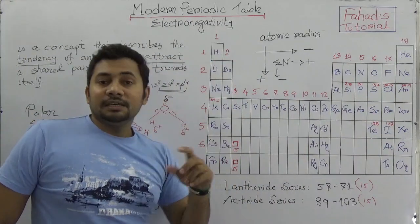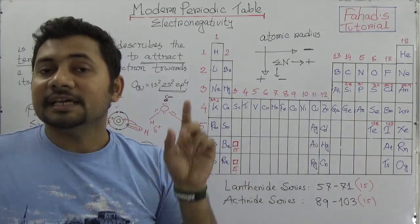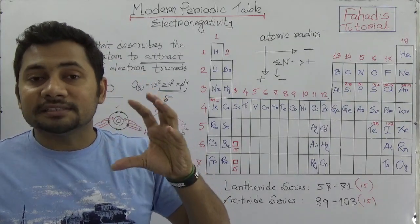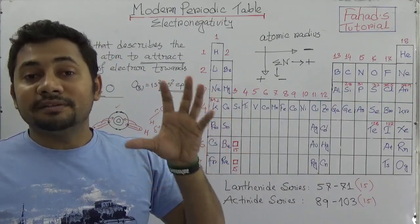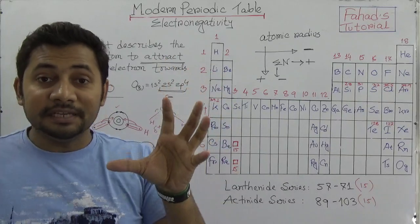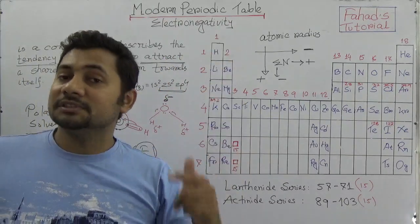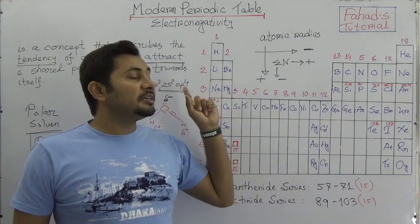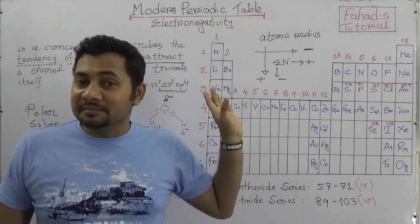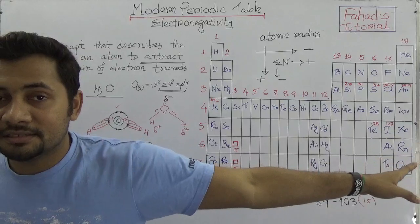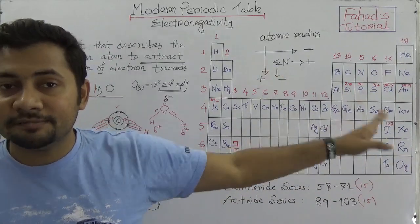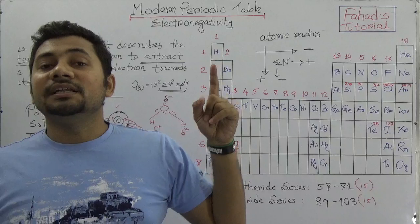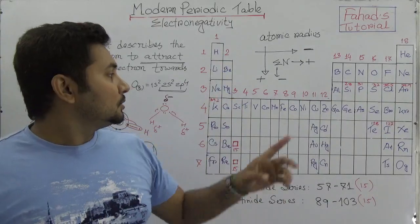If you go downwards in a group, electronegativity will decrease, because the atomic radius of the atom is increasing as you go downwards. It is a vice versa relationship. So the periodic trend of electronegativity is: going from left to right across periods, electronegativity increases; going downwards in a group, electronegativity decreases.